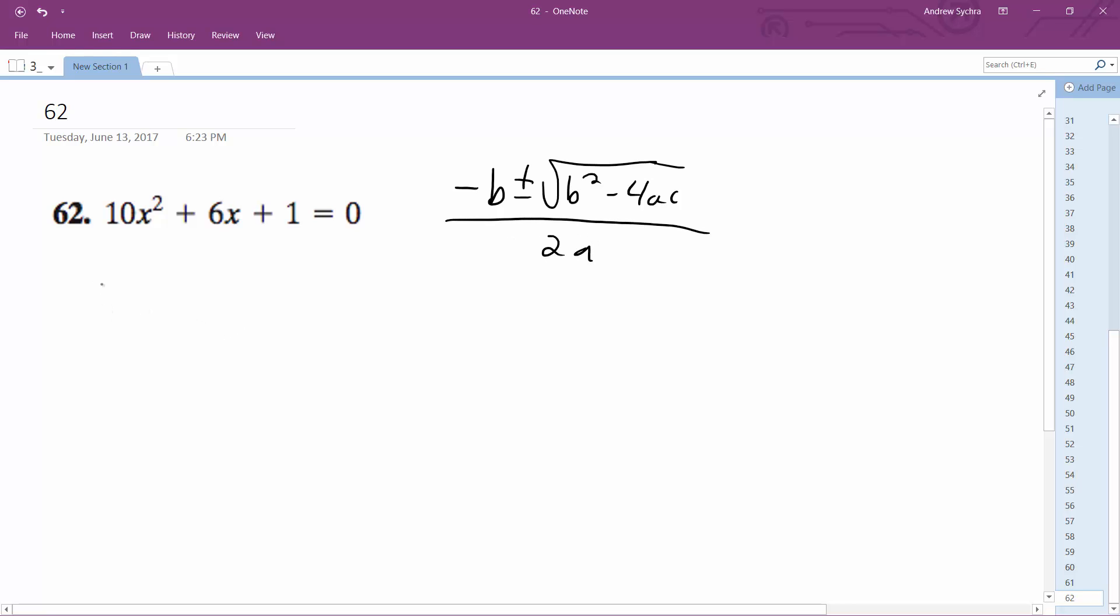So this ends up being, well a is equal to 10, b is equal to 6, and c is equal to 1. So we end up with negative 6 plus or minus the square root of 36 minus 4 times 10 times 1 all over 2a, which is 2 times 10.